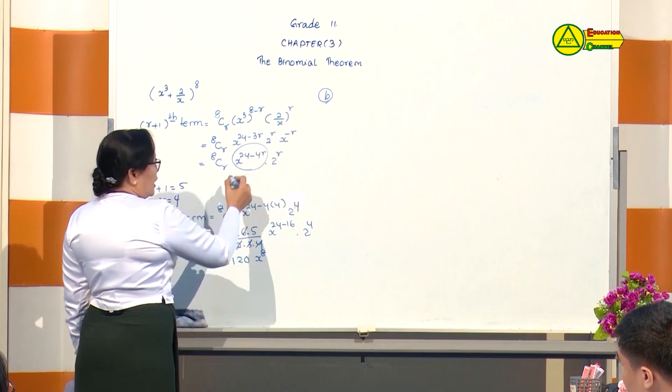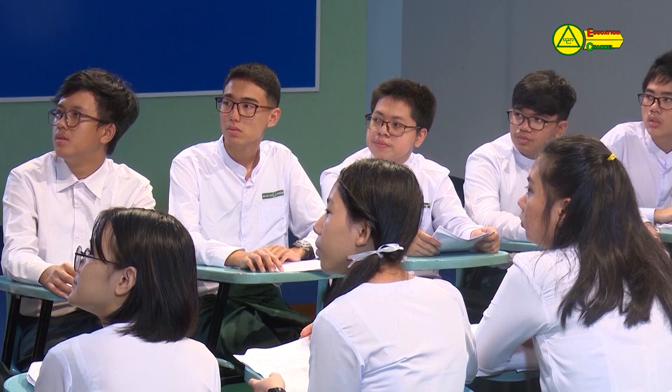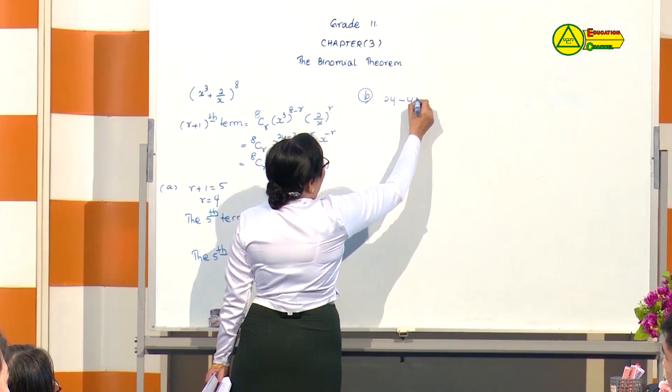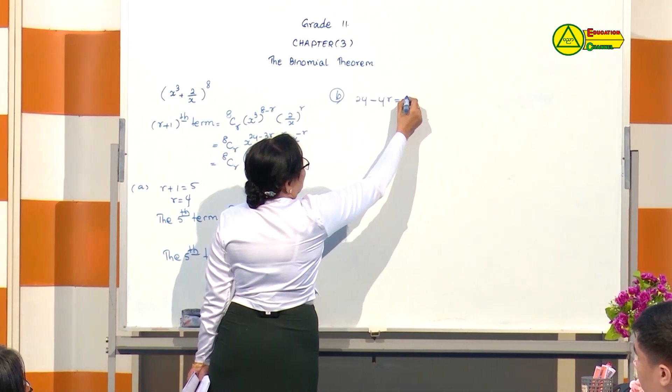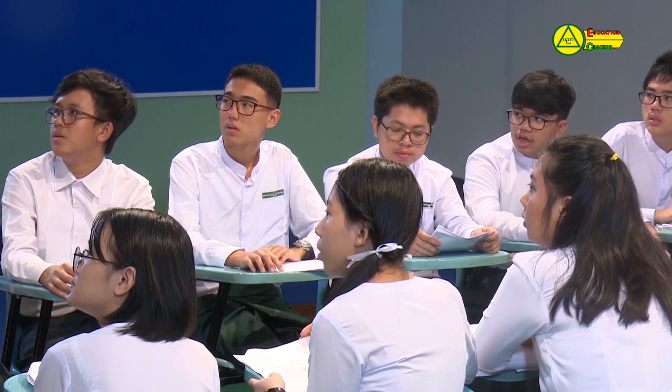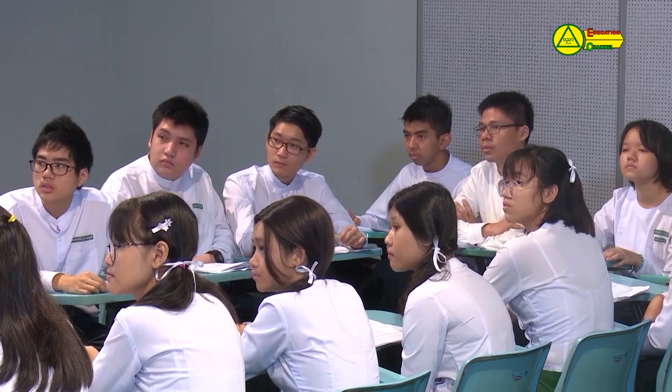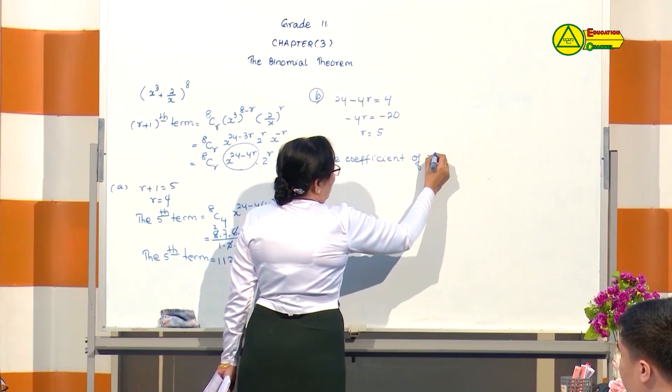Now, x to the power 3 is equal to x to the power 4. That's why 24 minus 4r is equal to 4. So minus 4r equals minus 20, and therefore r equals 5. So the term containing x to the power 4 is the R plus 1 term. The coefficient of x to the power 4, when r equals 5, is 8C5.